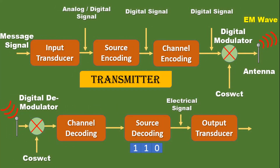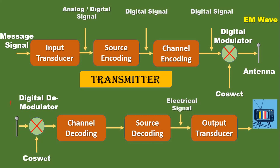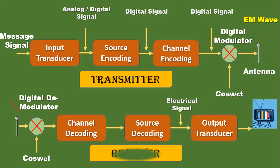The source decoder recreates the source output as an electrical signal and gives it to the output transducer. The output transducer is the last block, which converts the signal back into the original physical form that was present at the input of the transmitter. At the end of the output transducer, we have our message signal back — that could be a voice signal, a data signal, or a video signal. This is the complete block diagram of the transmitter and receiver of a digital communication system.